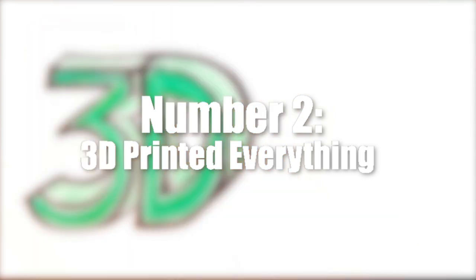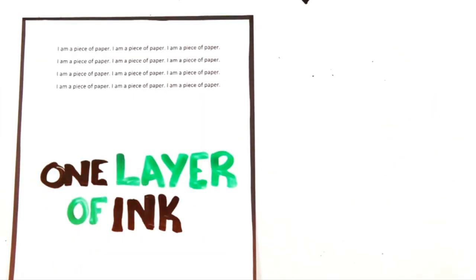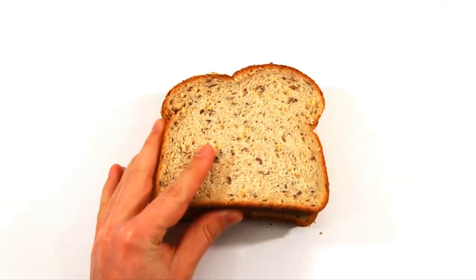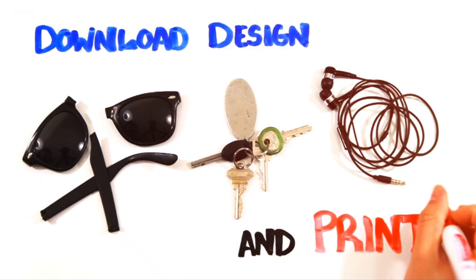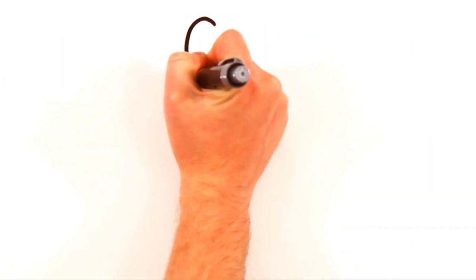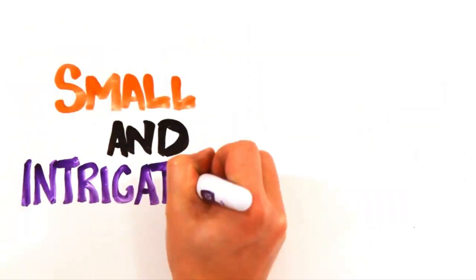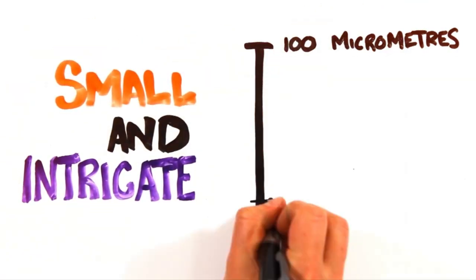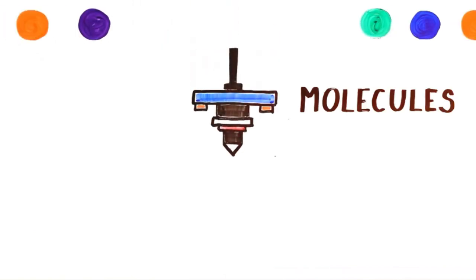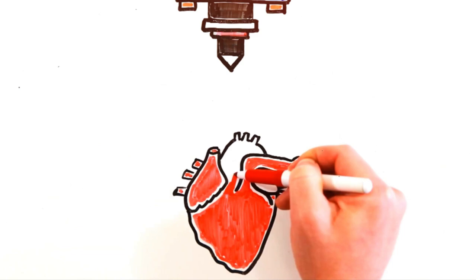Number 2, 3D printed everything. Get ready for a world where you can print almost anything at home. 3D printing is about to get even cooler. Imagine printing your breakfast or custom-fit shoes with a button press. Need a car part? Just print it. Future 3D printers might use various materials: plastic, metal, food, even living cells. Scientists are working on printing organs for transplants. This could revolutionize manufacturing, with local shops printing on demand, reducing waste and transportation. It gets wilder. Astronauts could print tools in space, and we might build houses with giant 3D printers.